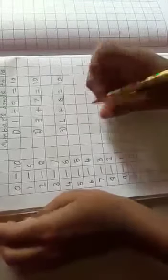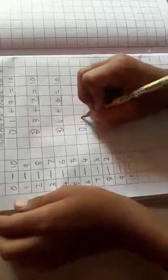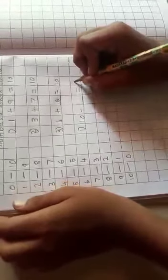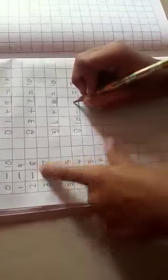Example of subtraction. First, 10 minus something is equal to 2. The answer is 8. Here is the 8.